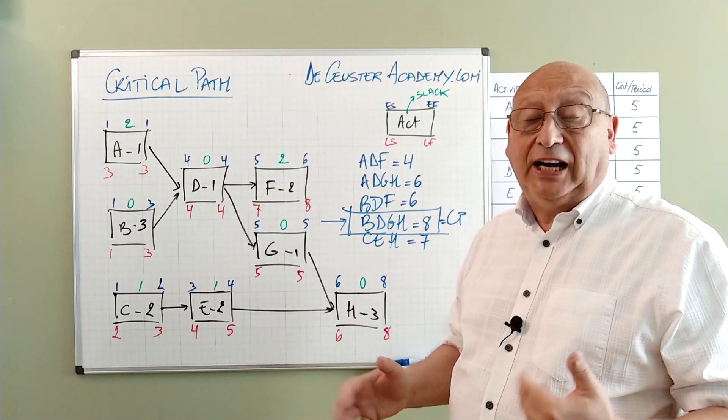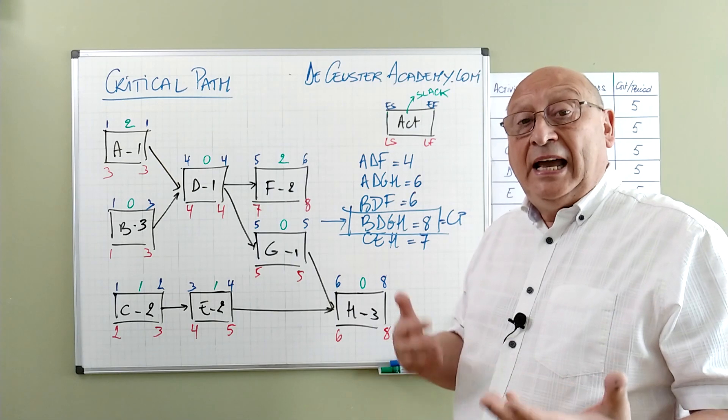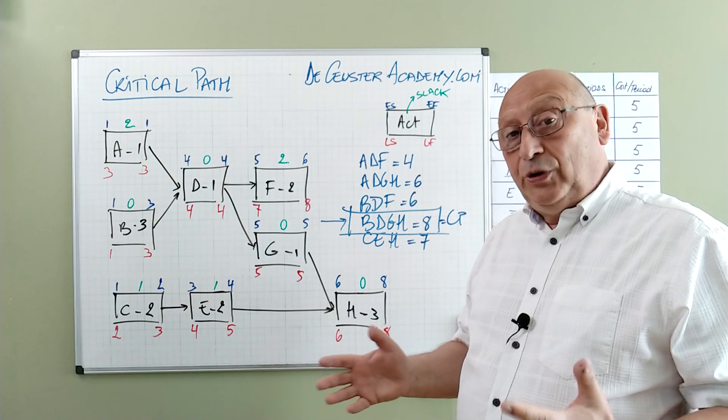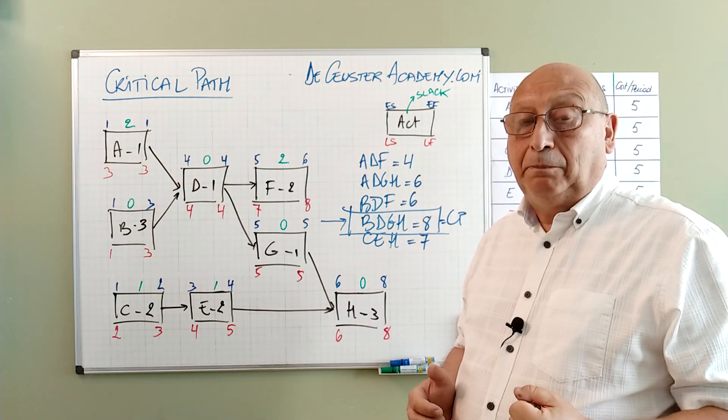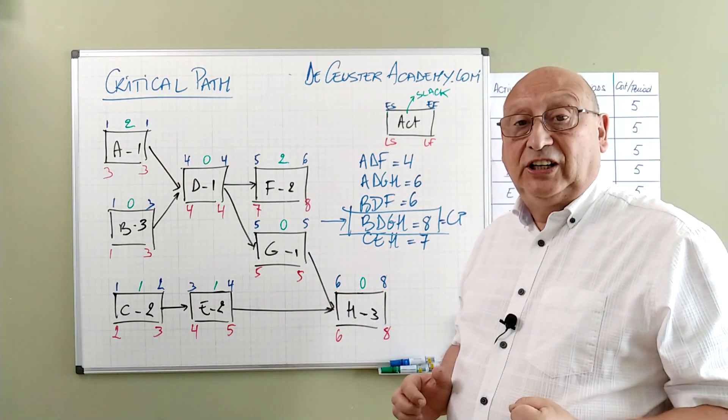We will see later in some other exercises that we may have critical path convergence. And critical paths can even change for example during execution. We have to be careful with the identification of the critical path. And we have to be sure that we always know which is the critical path.